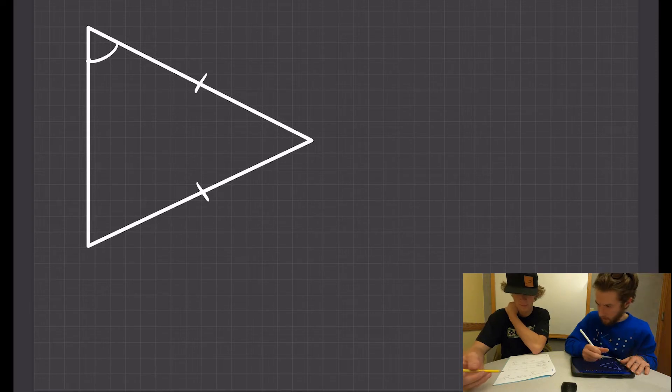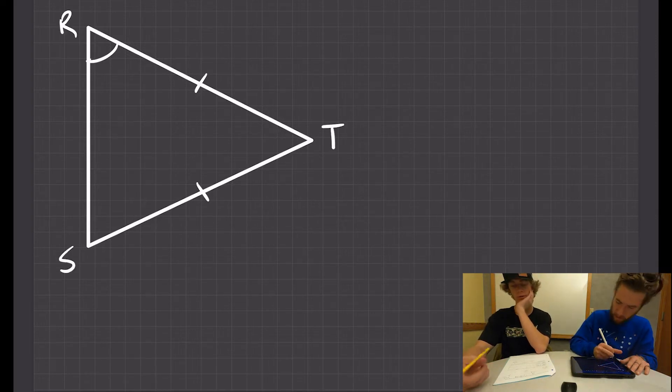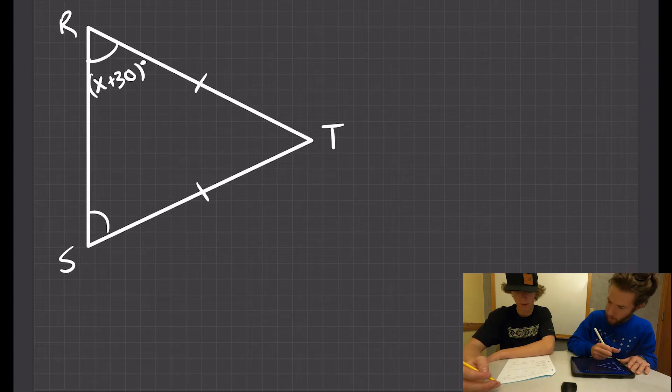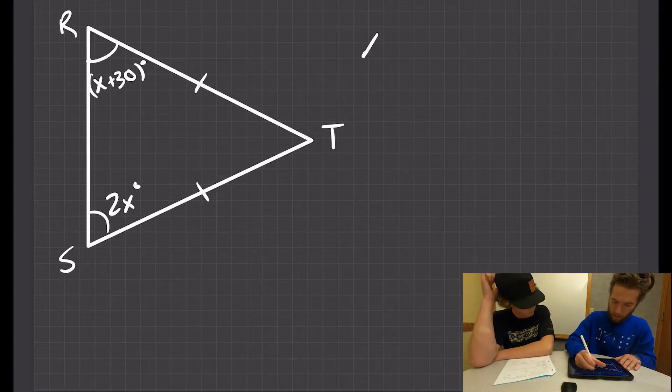So we have again two sides that are equal, congruent—fancy shape word we use for equal. This is x plus 30 degrees and then this one down here is 2x degrees, so you set them equal to each other.